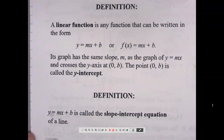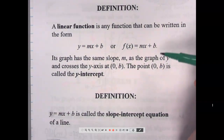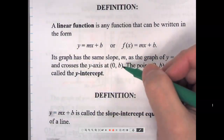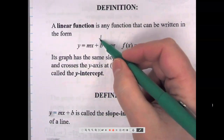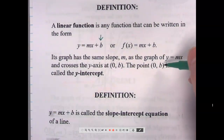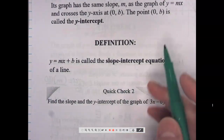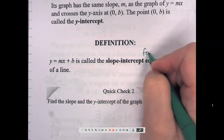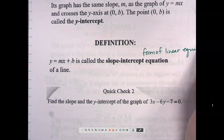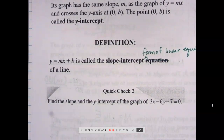A linear function is any function that can be written in the form y equals mx plus b, or f of x equals mx plus b. Its graph has slope m and crosses the y-axis at the point zero-b, which we call the y-intercept. This is called the slope-intercept form of a linear equation.